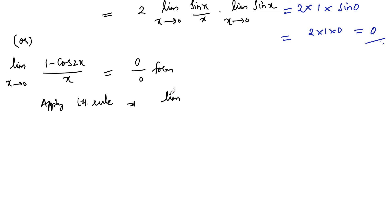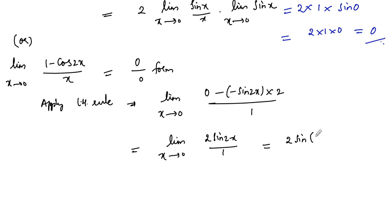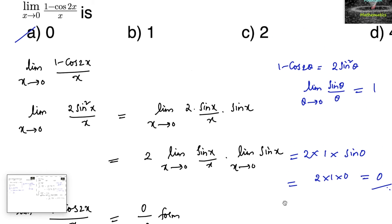Limit x tends to 0: differentiation of 1 is 0, minus differentiation of cos2x gives -(-sin2x × 2) = 2sin2x, and differentiation of x is 1. So we get limit x tends to 0 of 2sin2x / 1. It is no longer 0/0 form, so we substitute directly: 2 × sin0 = 2 × 0 = 0. Even by applying L'Hôpital's Rule, the answer is 0. Option A is the answer.